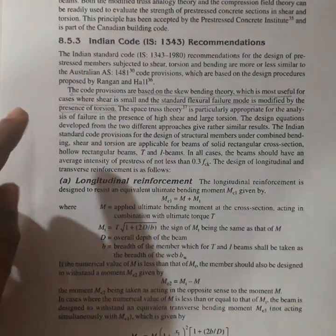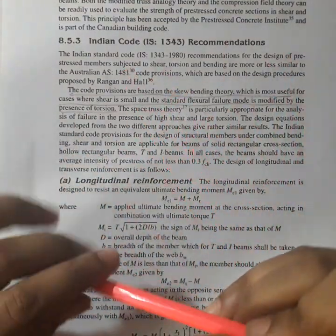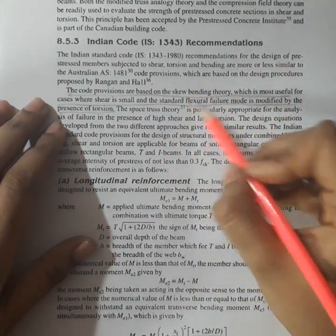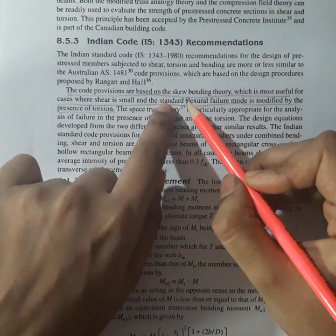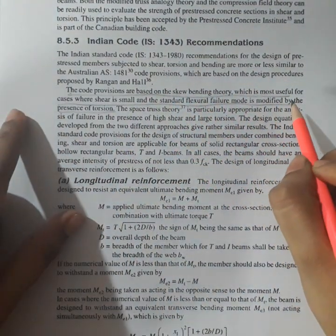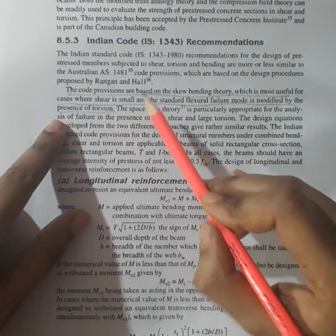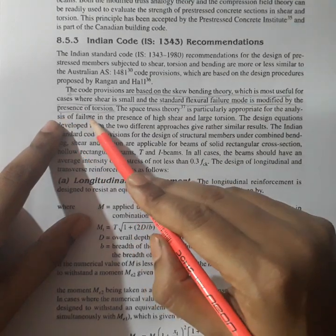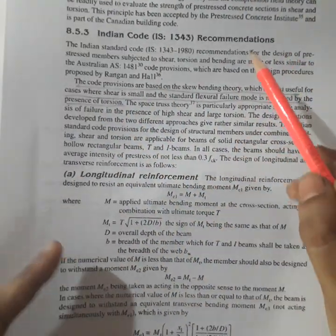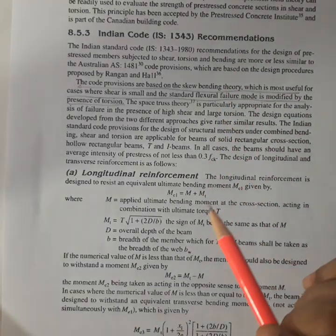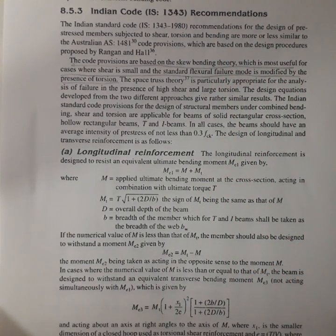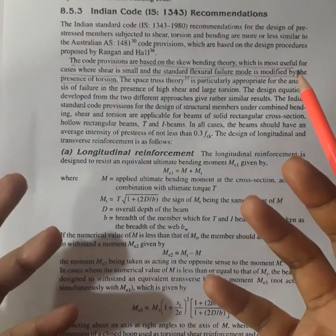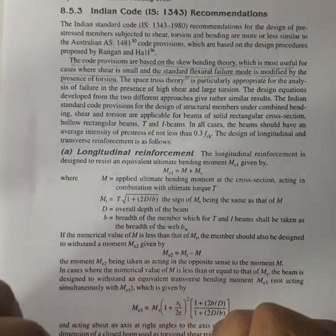Studying the Indian code recommendations, the code provisions are based on skew bending theory. Skew bending, which Indian code has adopted, is most useful for cases where shear is small and the standard flexural failure mode is modified by the presence of torsion. In IS code, they have provided the design norms and equations for the longitudinal reinforcement, transverse reinforcement, and the distribution of torsion reinforcement.